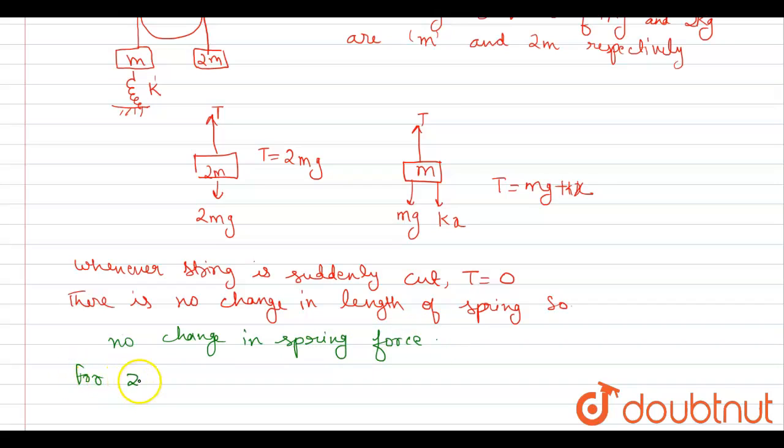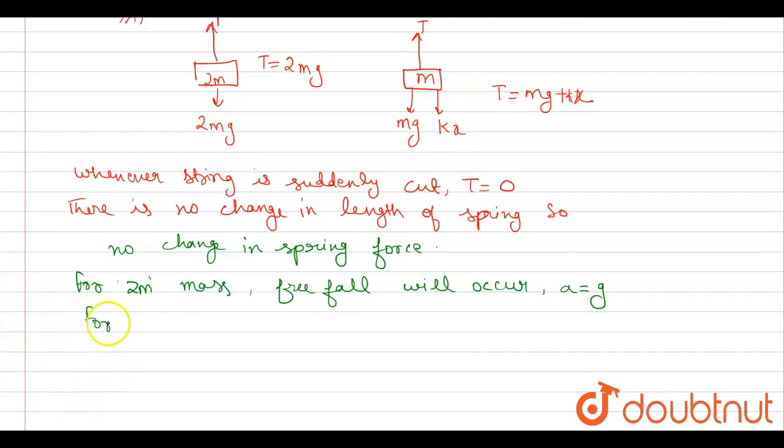For 2m mass, free fall will occur and we can say a is equal to g. For m mass, T is equal to kx plus mg which is equal to 2mg. This is before cutting. After solving this, kx is equal to mg.